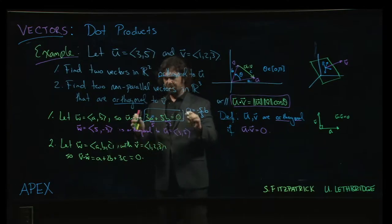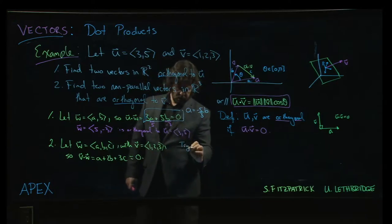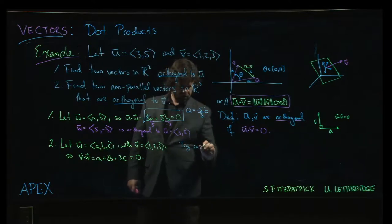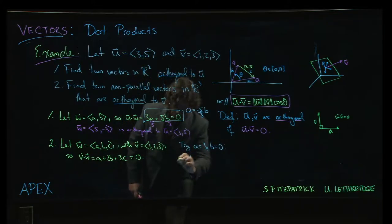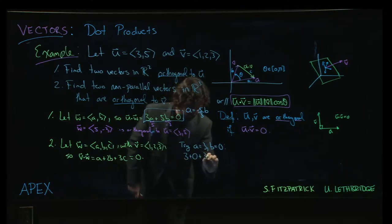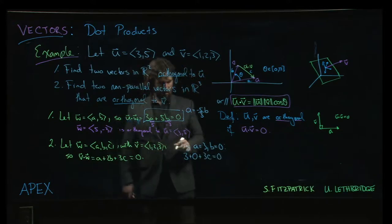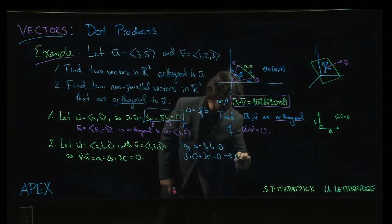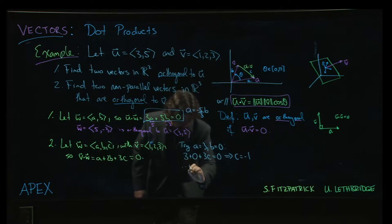I'll pick, and I'm going to pick just to keep whole numbers here, let's say a equals 3 and b equals 0. We plug those into our equation we get 3 plus 2 times 0 plus 3c, that has to be zero. So c then has to be minus 1. And that gives me the vector w as (3, 0, -1).